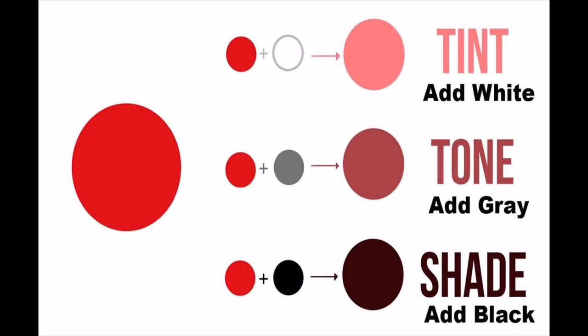So when mixing paint colors there's tints, tones, and shades. Tints are when you add white, tones are when you add gray, and shades are when you add black.